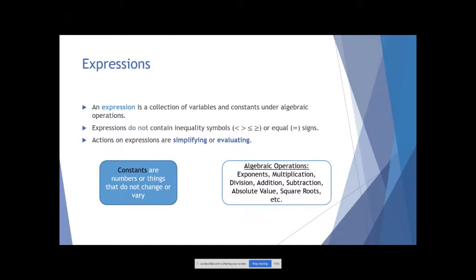An expression is a collection of variables and constants under algebraic operations. Everything we did with the order of operations — those are operations. Algebraic operations just means we're involving variables: there may be exponents on variables, or we may be adding or subtracting things with variables. An expression is basically a combination of letters and numbers with arithmetic signs like plus and minus signs. Expressions do not have inequality symbols or equal signs — only the symbols used for the order of operations.